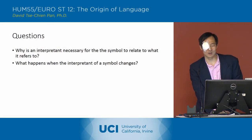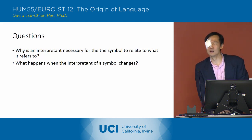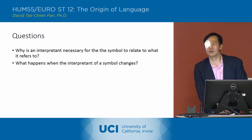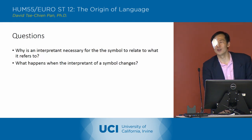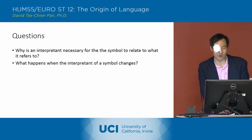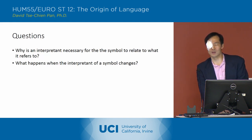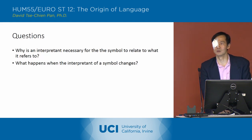So why isn't it necessary for the symbol to relate to what it refers to? Because there's no inherent quality in the relate and the correlate that provides you with an indication of the relationship. And if the interpretant of the symbol changes, then the meaning of that symbol will change as well.